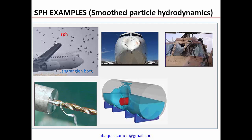A very typical example is a bird strike on an aircraft or airplane wing. The aircraft is moving at very high speed, a bird is hit, and the impact is so severe you can see damage on the aircraft body — severe deformation on the front nose body. Another example is a bird strike event on a helicopter. Through the regular Lagrangian meshing method, these events are very difficult to capture because they involve a lot of high deformation and result in numerical errors.